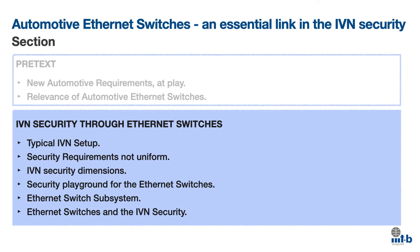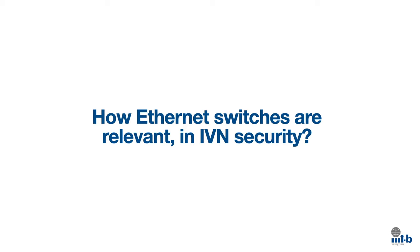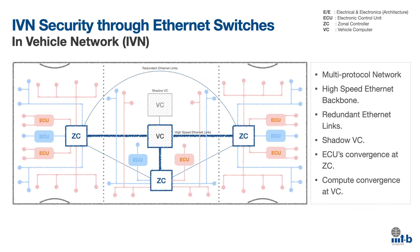With this we get into the next section. Here the IVN setup shall be elaborated, highlighting non-uniformity in security requirements, together with IVN security dimensions and security playground for the Ethernet switches. Towards the end, the Ethernet switch subsystem and IVN security perspective shall be elaborated. The first question is: how are Ethernet switches relevant in the IVN security? To understand this, let's look at a typical IVN — that is in-vehicle network.